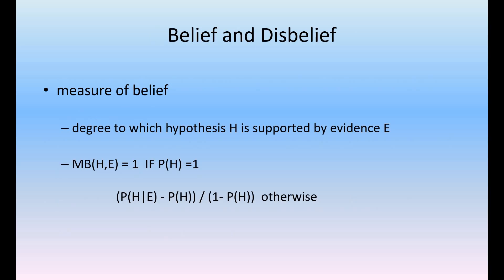What is belief and what is disbelief, and how can we measure them in certainty factor rules? The measure of belief can be described as the degree to which the hypothesis H is supported by evidence E. Measure of belief MB(H, E) equals 1 if the probability of hypothesis H equals 1. Otherwise, it is the probability of H given E minus probability of H, divided by 1 minus probability of H.